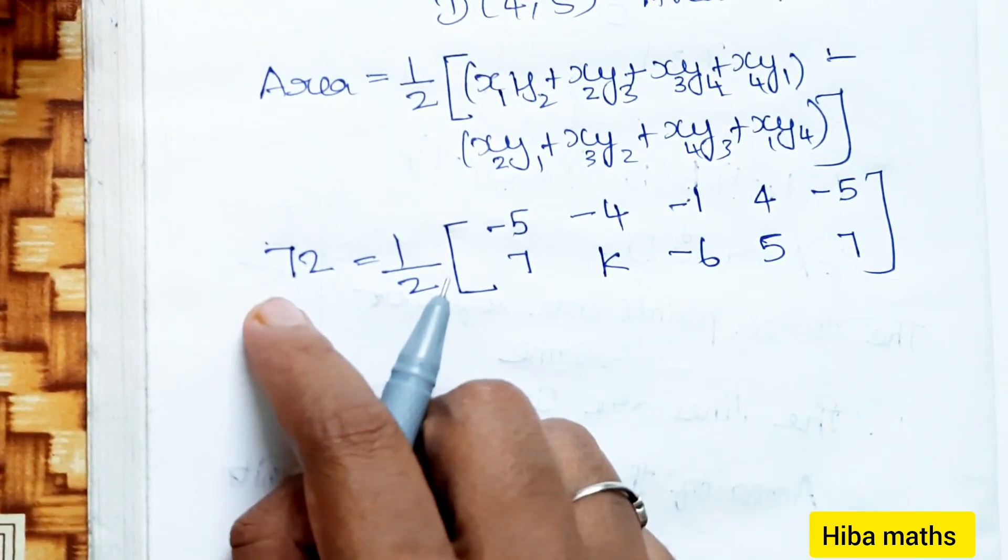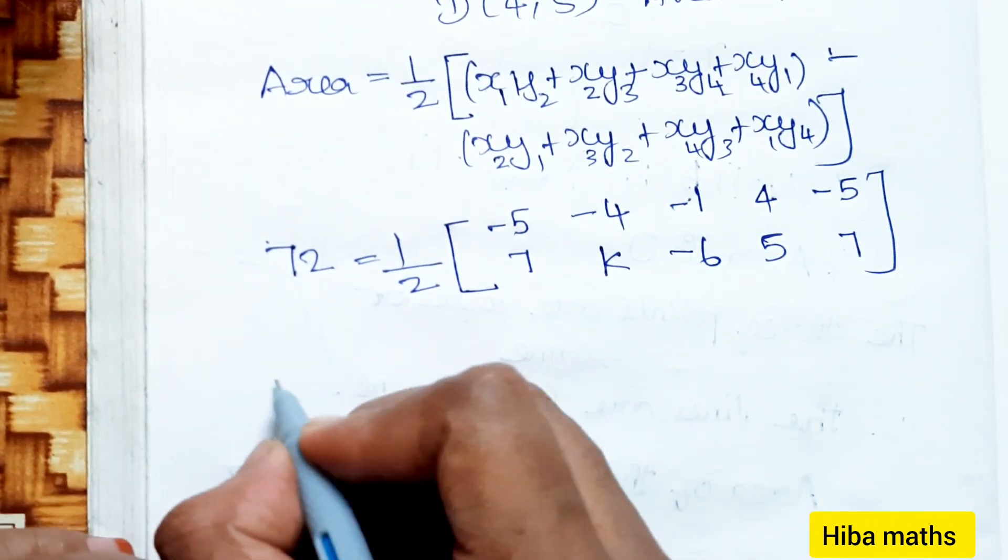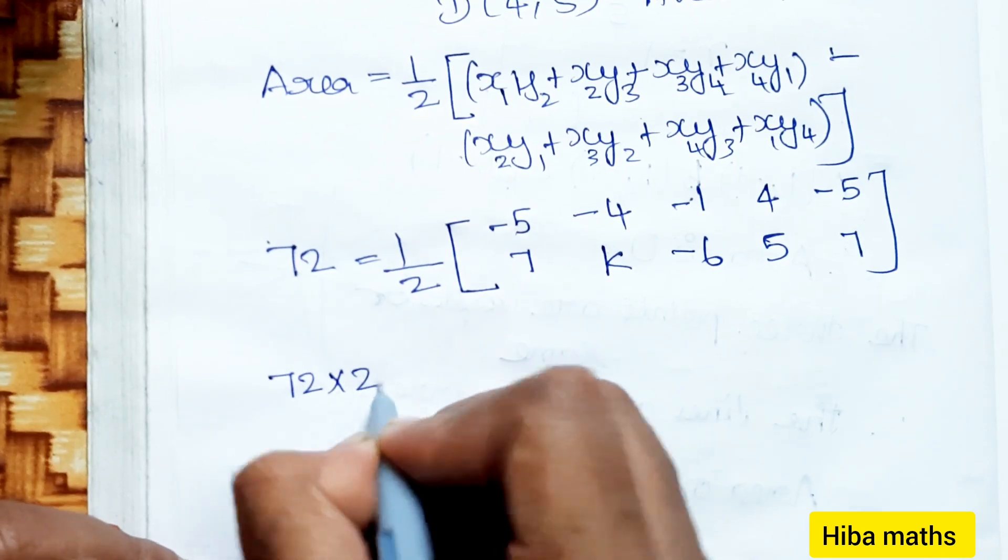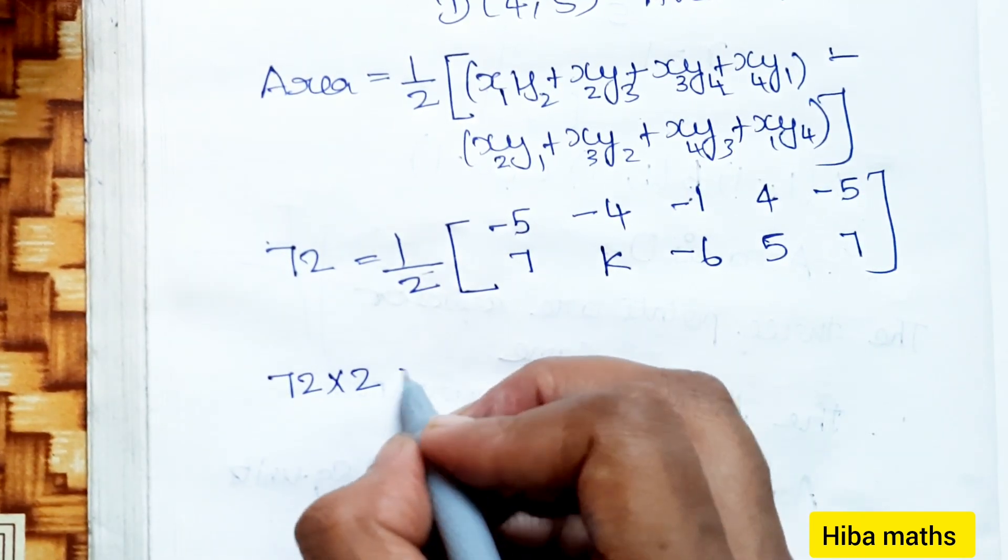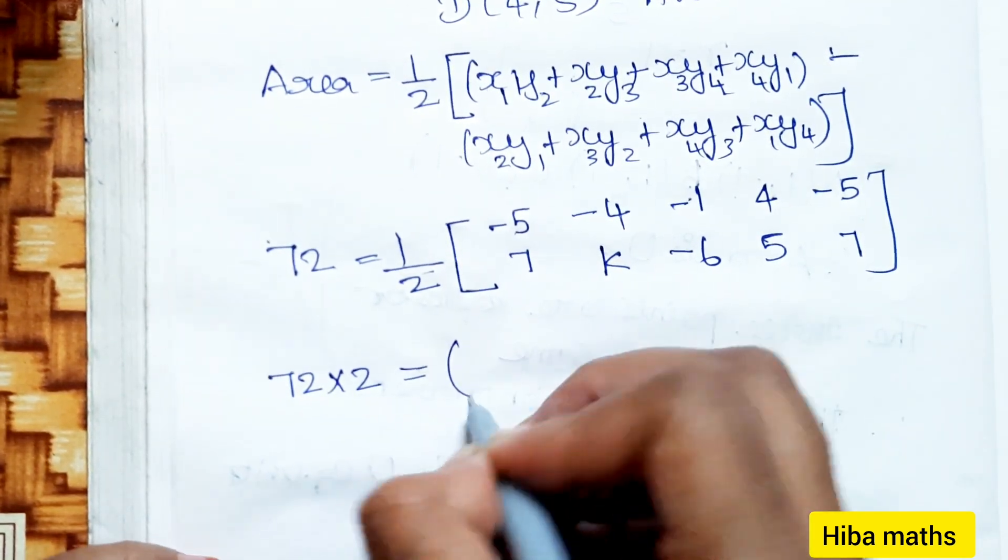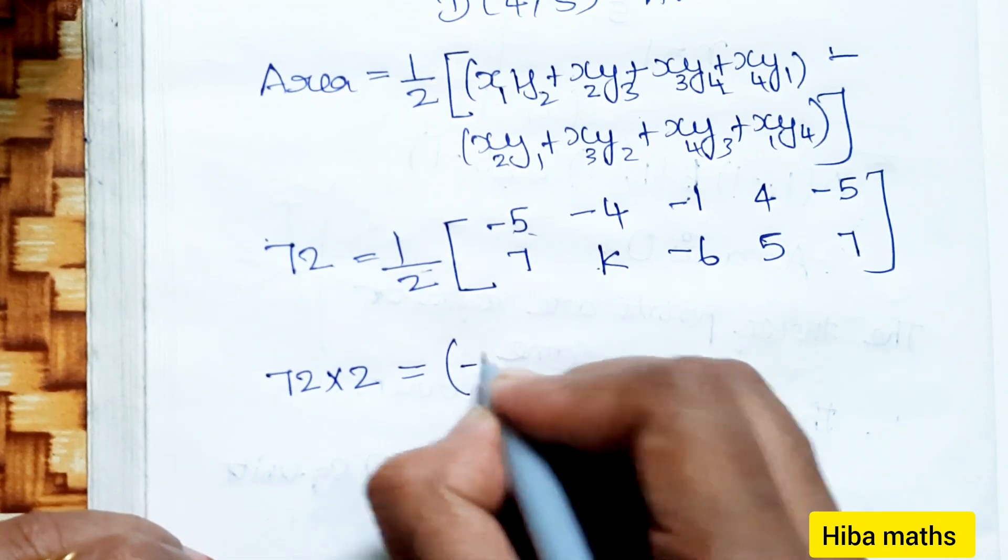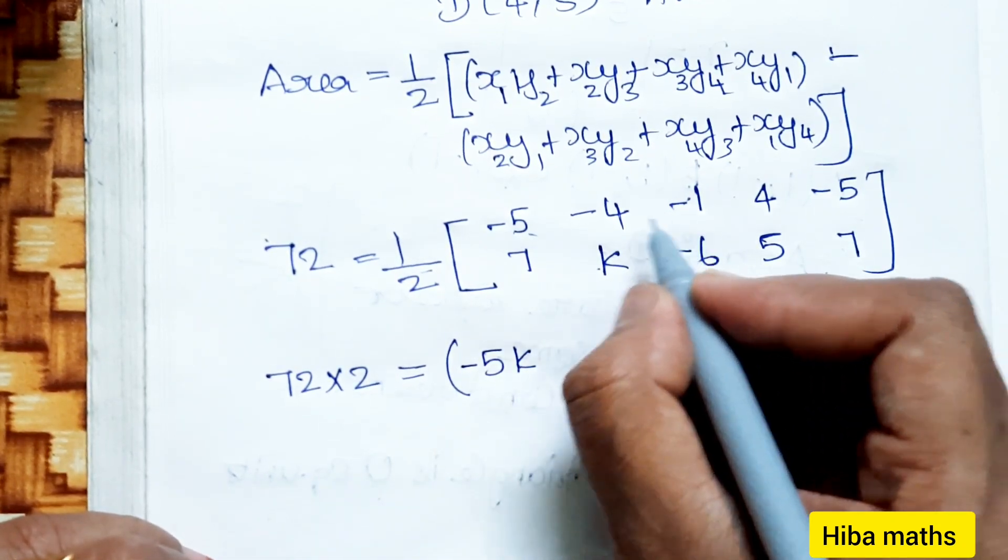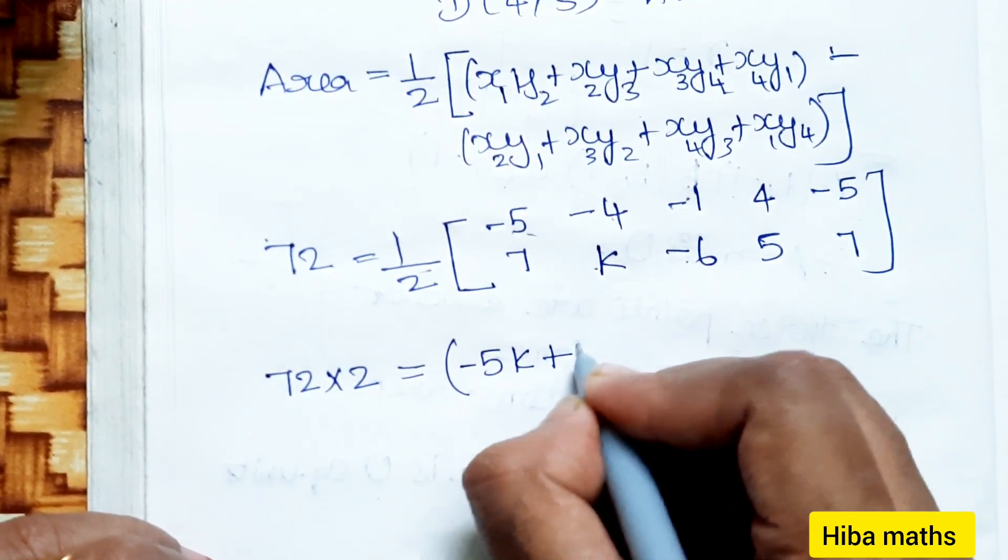Next, 72 multiplied by 2, that is 144, equals -5K, minus into minus plus 6, 4 times 6 is 24.